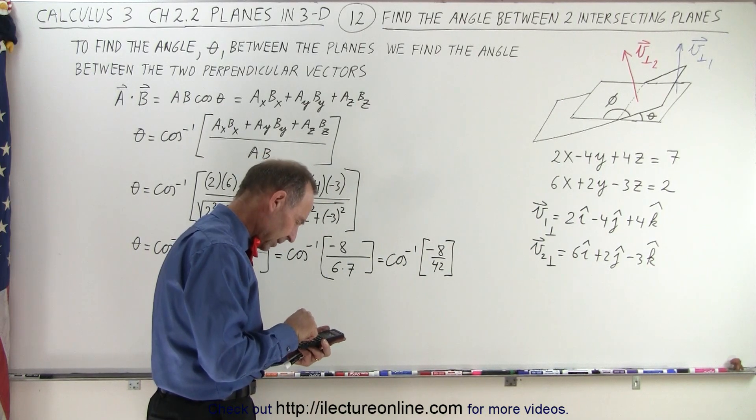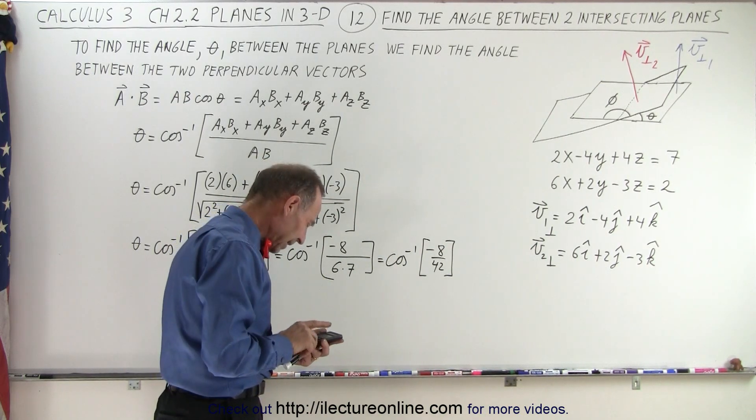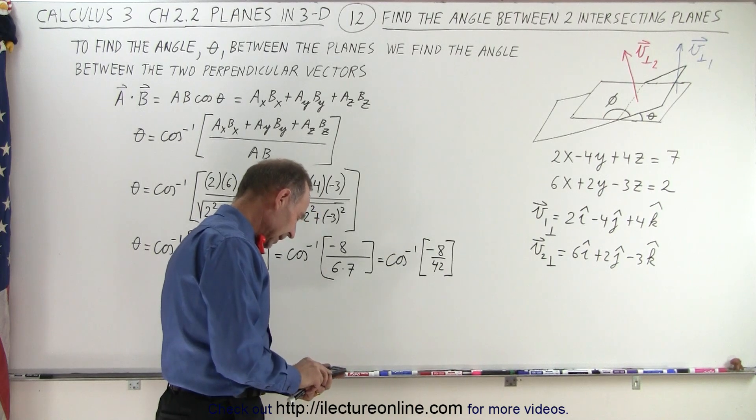Inverse cosine. Okay, we get an angle of 101 degrees.